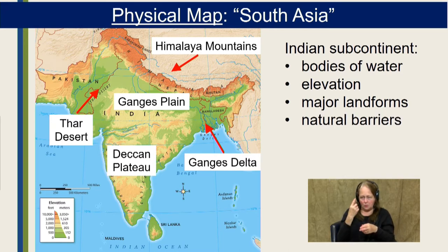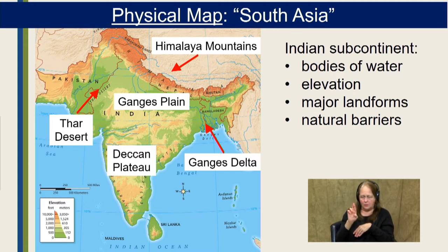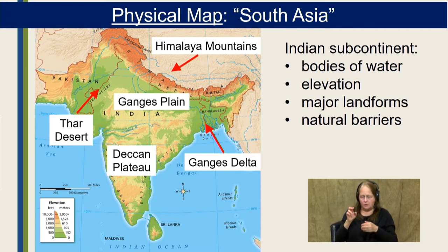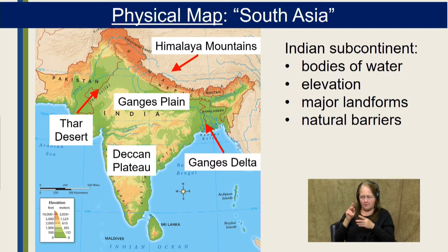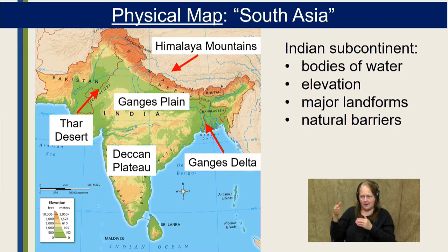Several natural barriers have contributed to India's history. The very longest border India has is with the ocean. It also has the border of the Himalaya Mountains, whose tall peaks have really prevented it from being bothered by its neighbors to the northeast. The Thar Desert protects it from activity with Pakistan — those are its two neighbors it would have the most conflict with.